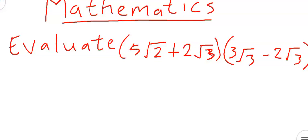Evaluate (5√2 + 2√3)(3√3 - 2√3). We have one bracket with 5 root 2 plus 2 root 3, and another bracket with 3 root 3 minus 2 root 3.